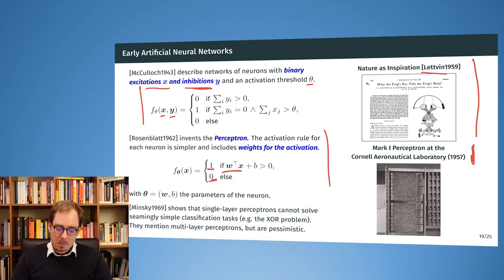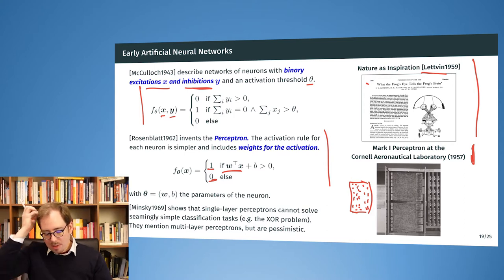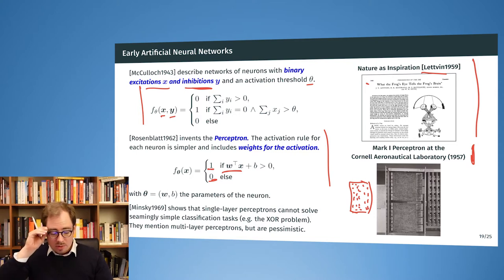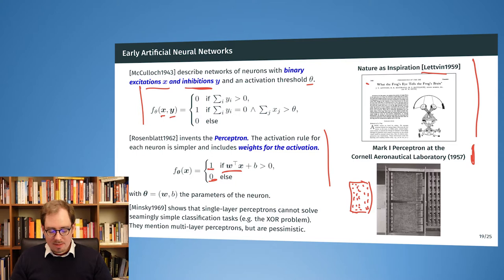Around the same time at Cornell, people working on the perceptron had already built a first physical perceptron. They used photo diodes and took 20×20 images as input — already 400 pixels. There were a lot of cables; everything was more or less analog, with potentiometers to change the weights. They were already working in the 1950s on object detection based on perceptrons. Everything ground to a halt in 1969 when Minsky and Papert published a book showing problems with perceptrons — for example, the XOR problem that a perceptron cannot solve.